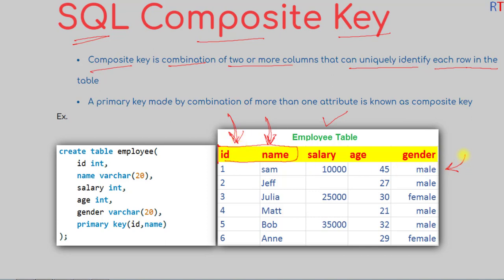then it is guaranteed to uniquely identify each row of that table. Also, a primary key made by combination of more than one attribute is known as a composite key. Like an example, we have the employee table and...